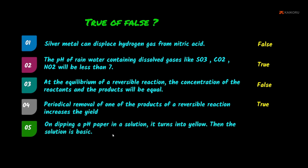Fifth: on dipping a pH paper in a solution, it turns yellow. Then the solution is basic. If a pH paper turns blue, we say it is basic. Yellow indicates an acidic solution, not basic. So this statement is False.